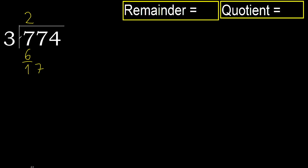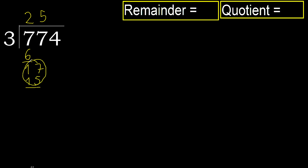3 multiplied by 6 is 18. It is greater. Multiply by 5: 15. It is not greater. Subtract. 17 minus 15 is 2. Next, 24.